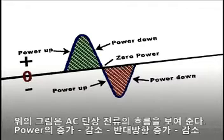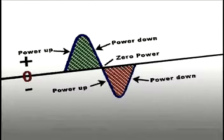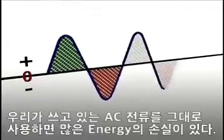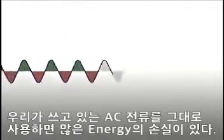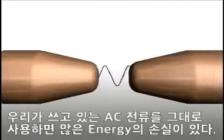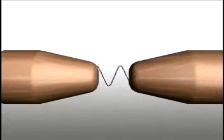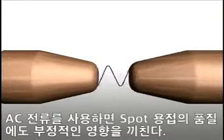At three different times in one cycle, the power is zero as the current completes the cycle. This means that there are inherent losses involved in AC power. The losses result in inefficient use of available power and when used with resistant spot welding, the weld quality is negatively affected.